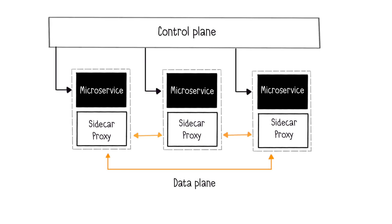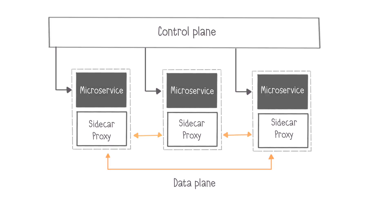Then, the control plane is responsible for configuring and managing the sidecar proxies. It defines policies to implement usage rules — for example, which microservice can contact which microservice, or dynamically limit traffic to a service. This central component also ensures security functionalities such as user authentication or communication encryption.